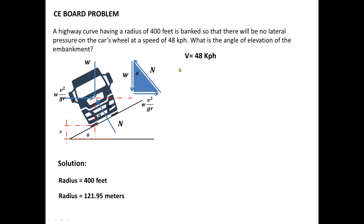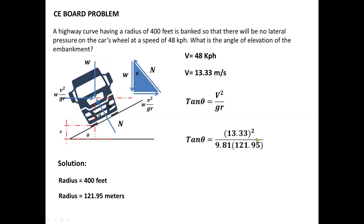The velocity of 48 km per hour must also be converted to meters per second. Remember that 1 km equals 1,000 meters and 1 hour equals 3,600 seconds. So 48 km per hour equals 13.33 meters per second. Now with all the given values in consistent units — r = 121.95 m, V = 13.33 m/s, g = 9.81 m/s² — we can solve for the angle of elevation using tan(θ) = V²/gr by direct substitution. The final answer is 8.45 degrees.